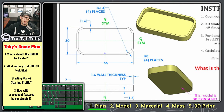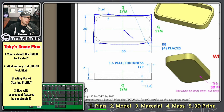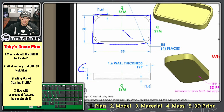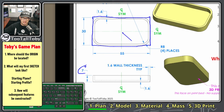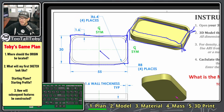Now that I know where the origin is going to be, my next question is where's my first sketch going to be and what will it look like. My first sketch is going to be on the top plane — just a rectangle, 30 by 55, centered right on the origin. Once I've got that rectangle sketched I'm going to do an extrusion, turning that rectangle into a solid and bringing it up to a height of seven millimeters.